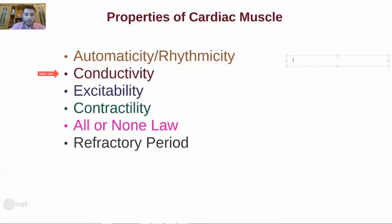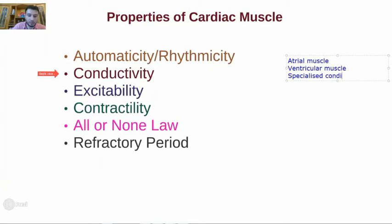In the heart, we divide three major types of muscles. One is the atrial muscle, the other is the ventricular muscle, and the third one is the specialized conductive fibers.